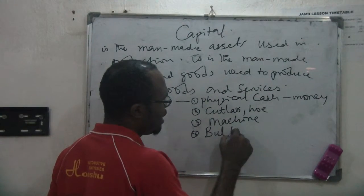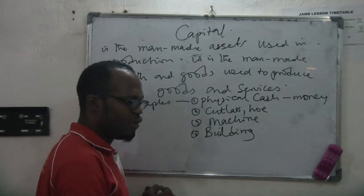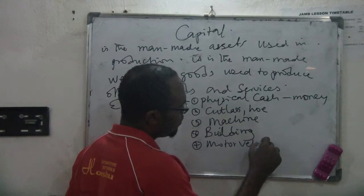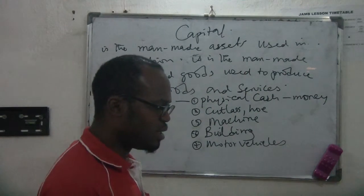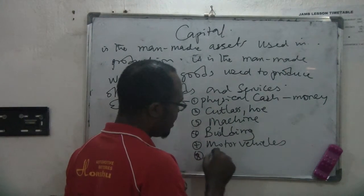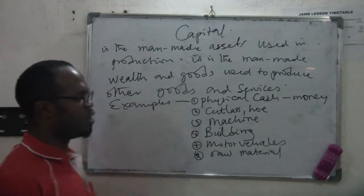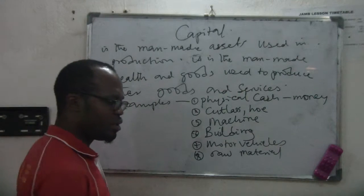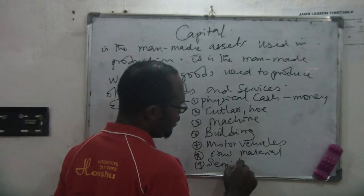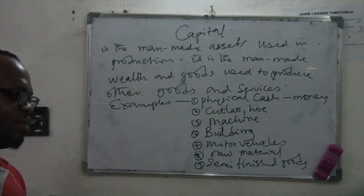Also, buildings — the building is not the land, it is capital. The building for your factory is capital. Then motor vehicles — the vehicle you drive to work is your capital. Raw materials, other than mineral resources, that you use and work with are also your capital. Semi-finished goods are also capital.